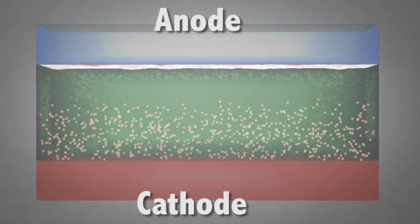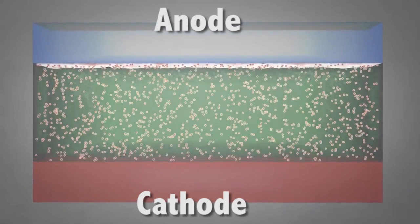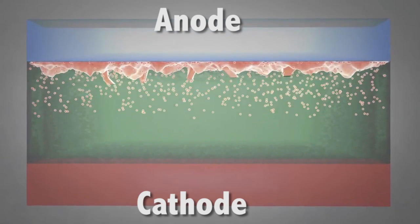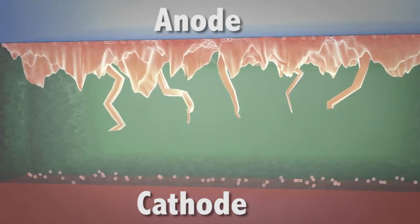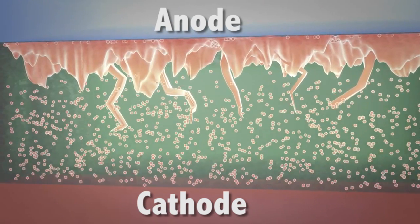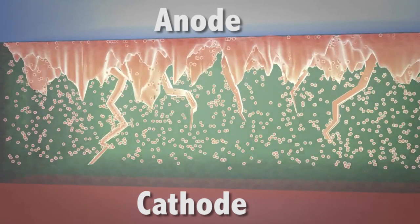The ions return when the battery is being charged. Repeated charging can cause metal dendrites to form on the anode. These dendrites can grow until they finally reach the cathode, causing the battery to short circuit.